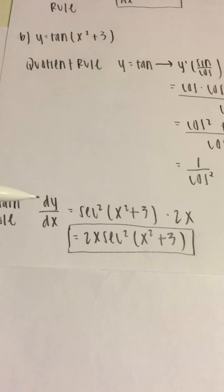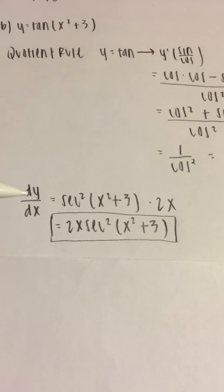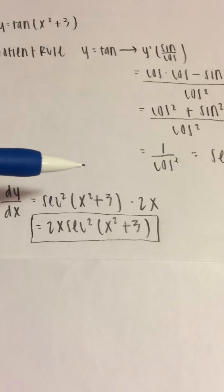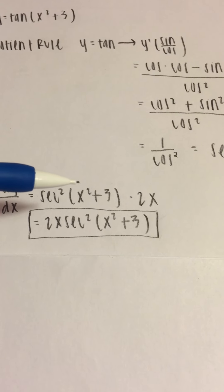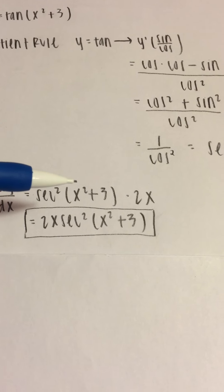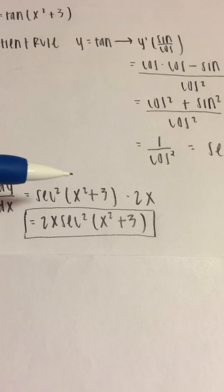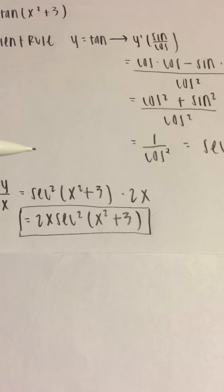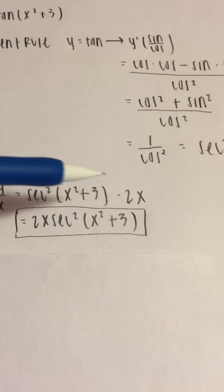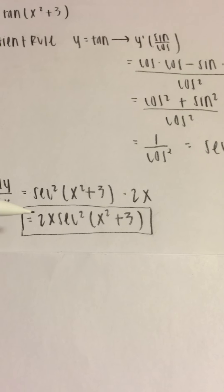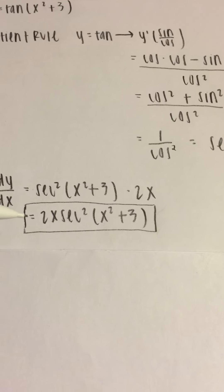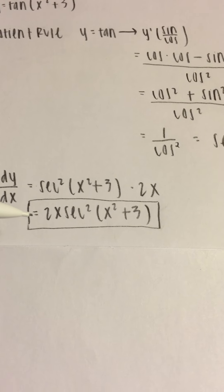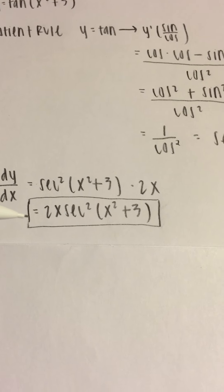Continuing with the chain rule, we get secant squared of x squared plus 3. Now we need the derivative of the inner function. The derivative of x squared plus 3 is 2x, so we multiply by 2x. The final answer is 2x times secant squared of x squared plus 3.